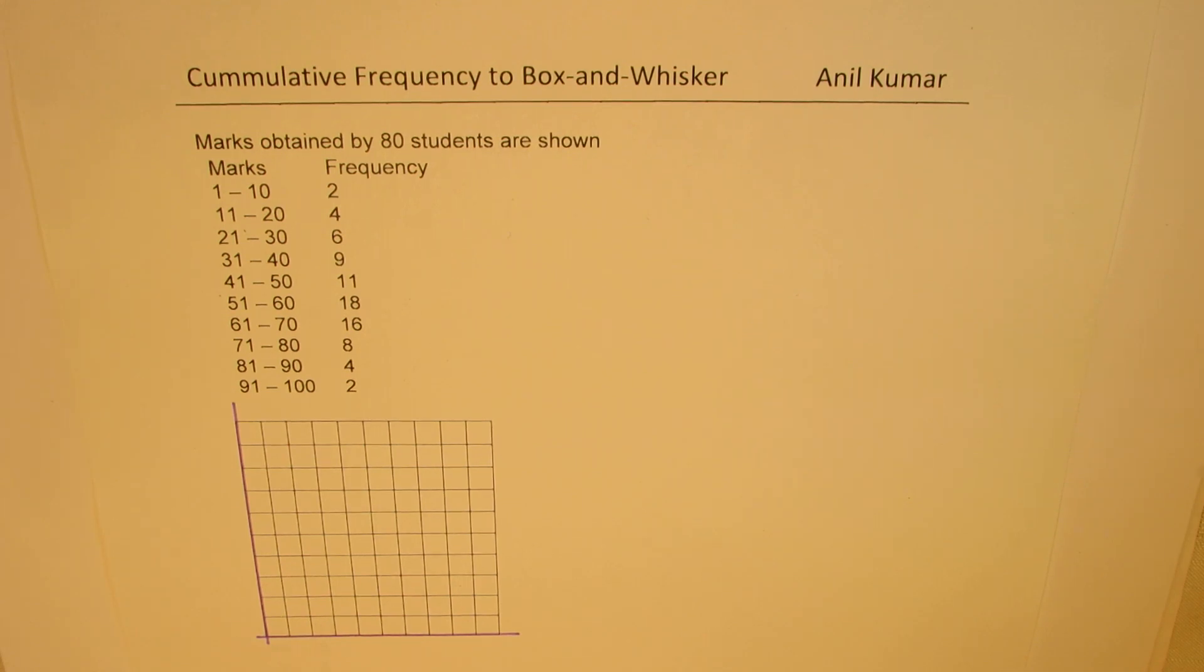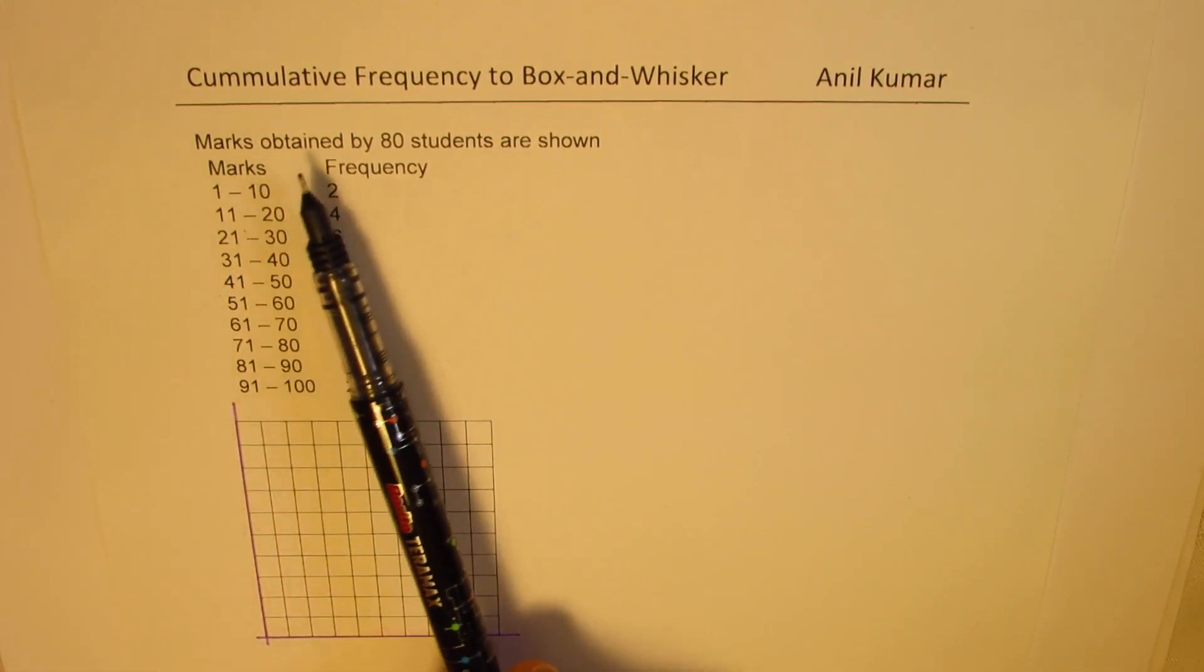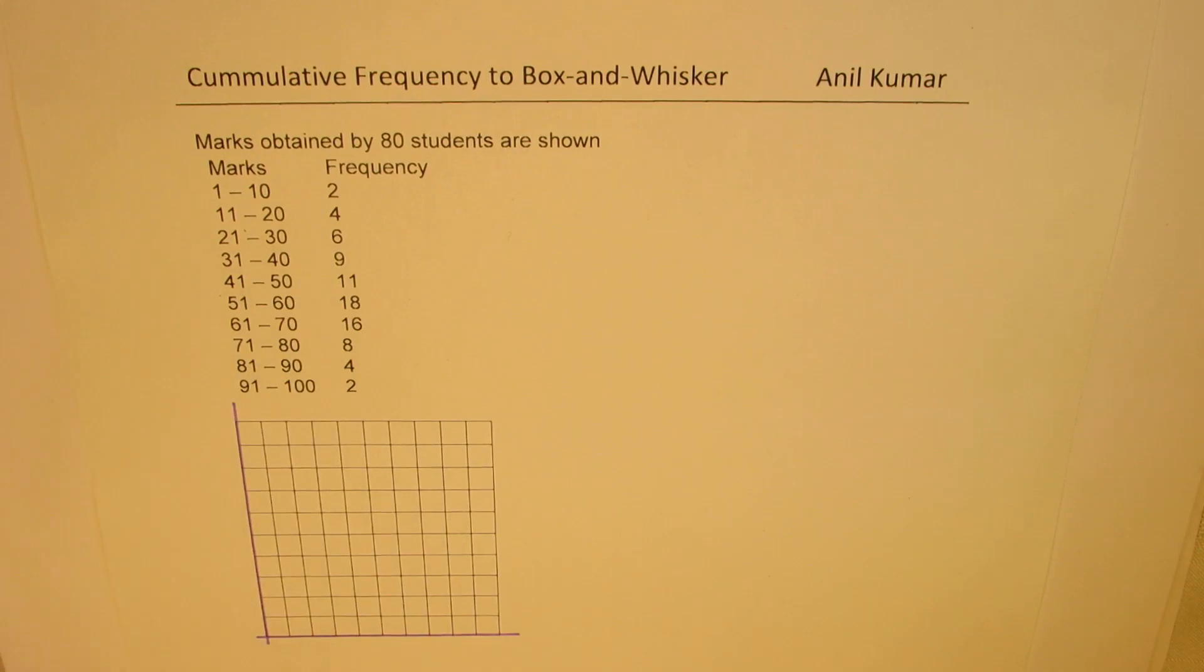we'll see a beautiful application of cumulative frequency. For grouped data, we'll now be in a position to estimate median fairly accurately. And then we'll also find the quartiles and plot box and whisker diagram. To begin with, we are given marks obtained by 80 students. And with these marks, we are going to first make cumulative frequency graph and then box and whisker diagram.